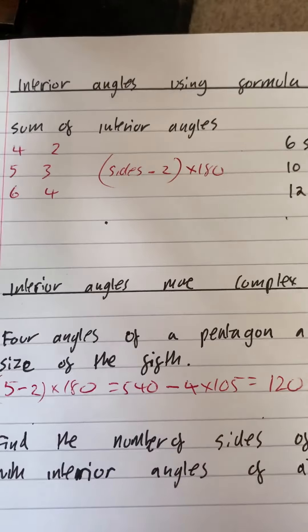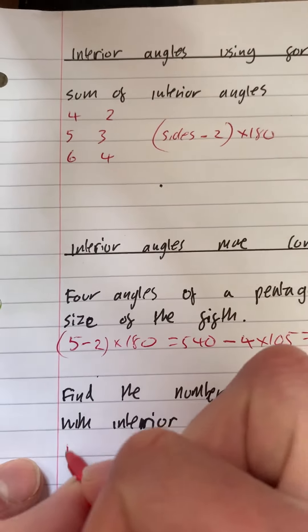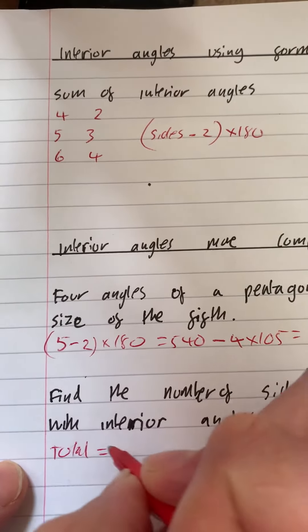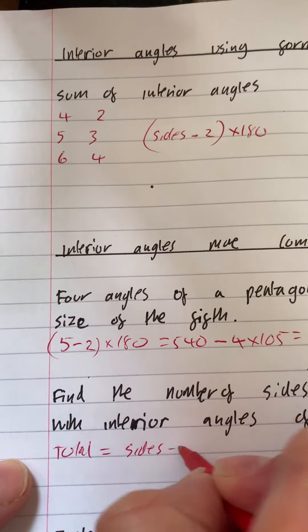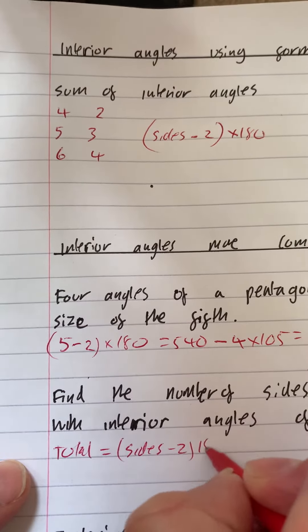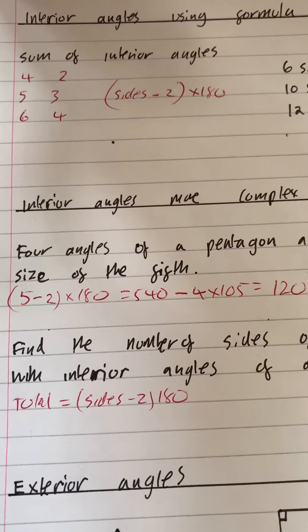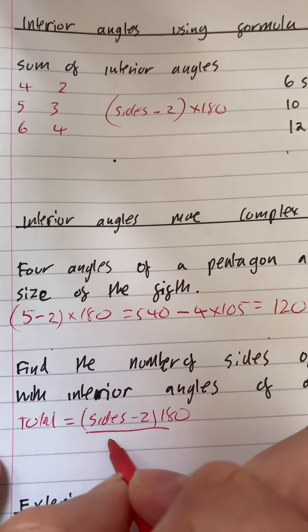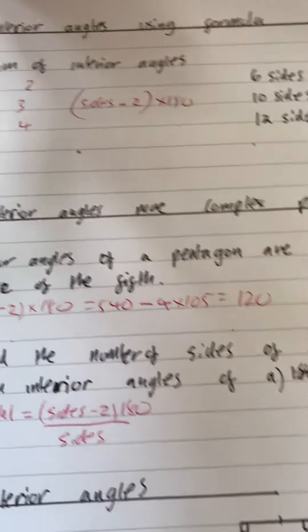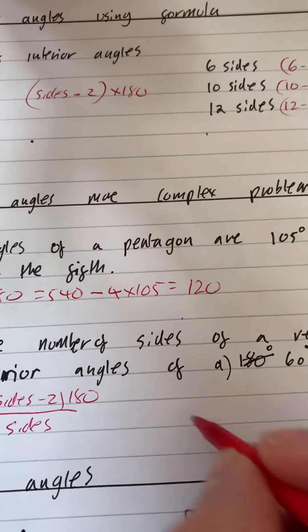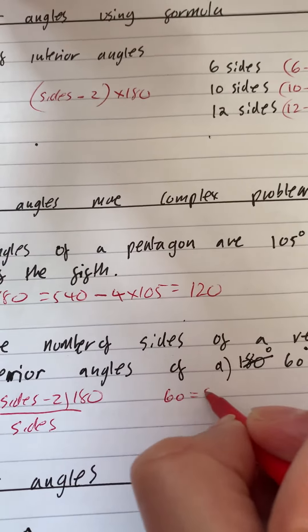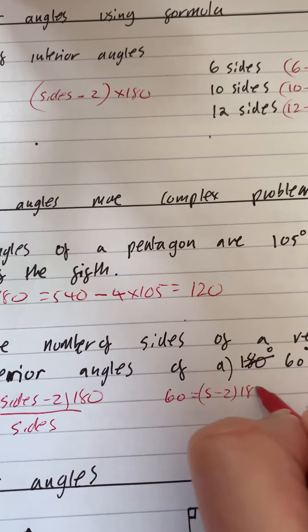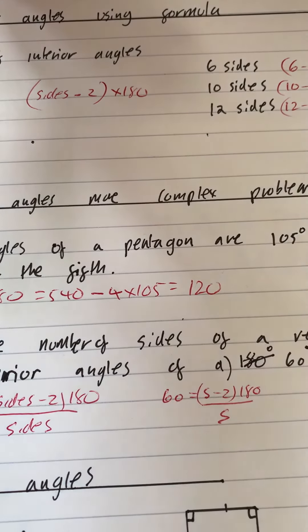We know that the total interior equals your sides, take two, times 180. Now, if we wanted to work out what one of them would be, we'd divide that by your sides. Now, in the question, we know the first one's 60, so we need to work out what S is, or the sides.